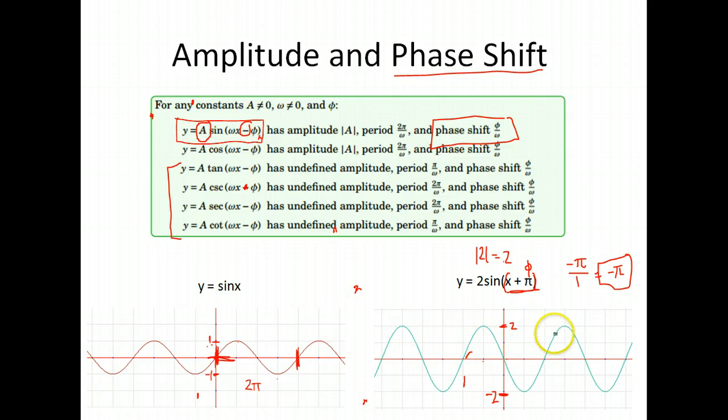So remember that sine usually started here. If this were just 2sin(x), it would start here, up, back down to zero, negative two, down to zero. But what's happened is it's been shifted over π to the left. So now our zero here is at negative π instead of at zero. And this peak that was at π/2 is at negative π/2. So it's shifting the entire graph to the left. So that is how we find our period, our amplitude, and our phase shift.